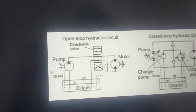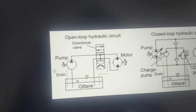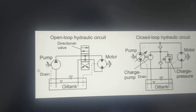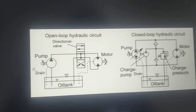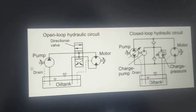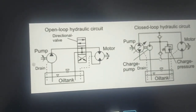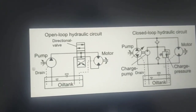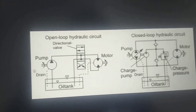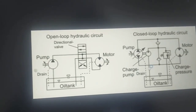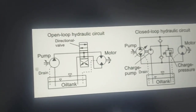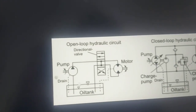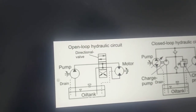In the open loop circuit, fresh oil always goes from the tank and all oil returns back to the tank. But in the closed loop circuit, the same oil circulates all the time — only the first fill comes from the tank. If there is leakage, it will draw a small quantity from the tank again. Because of this, in closed loop you can use a small tank like 50 to 100 liters, but in open loop you need a large tank of 300 to 400 liters.